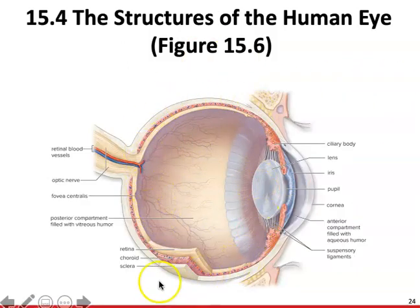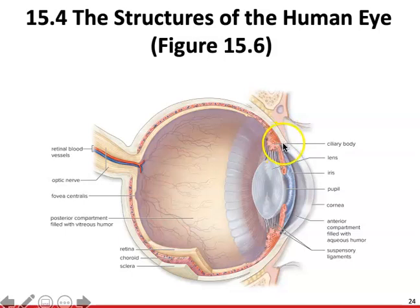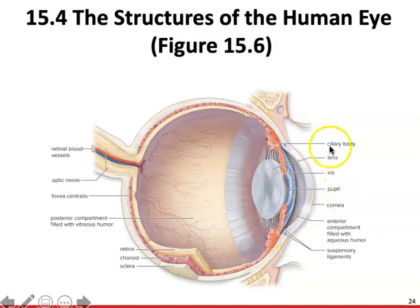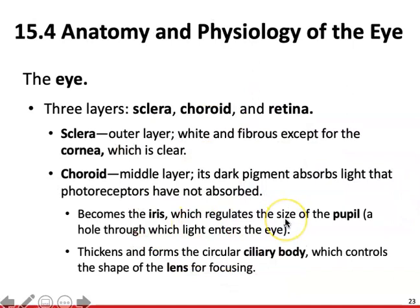The sclera is the white part — that entire ball-shaped region. Then there's a sort of hole in the sclera, which is going to be the cornea. It's not a direct open hole into your eye; there is a clear portion that's your cornea right here. This is what allows light to enter into your eye. That's the outer region of the eye.